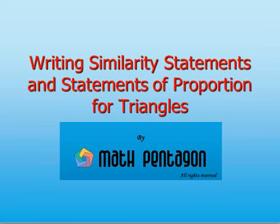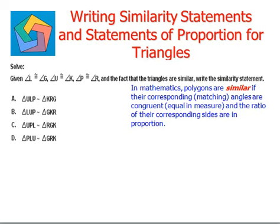To understand the concept, let's look at the concept of similarity first. In mathematics, polygons are similar if their corresponding, that is matching, angles are congruent. Congruent means equal in measure and the ratio of their corresponding sides are in proportion.